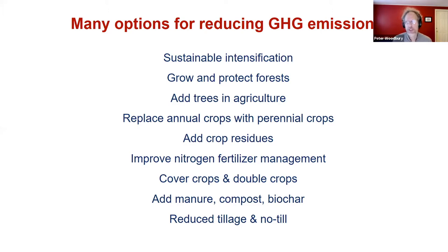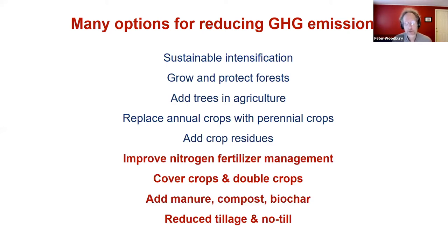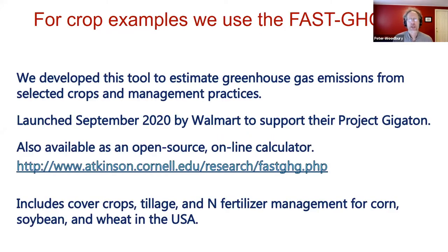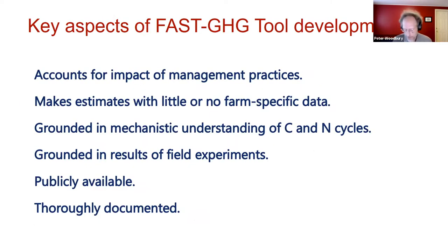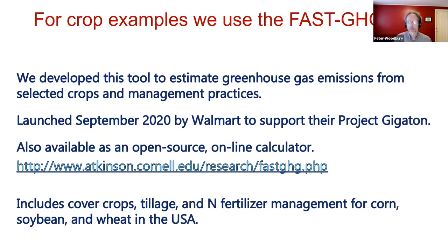There are lots of options for reducing greenhouse gas emissions in agriculture, and I hope you were able to hear Jennifer's previous talk where she went through quite a number of these. I'm going to focus on the bottom four here that are highlighted in red font. I'm going to be focusing on commodity crop production in New York State, but a lot of these results are relevant for other cropping systems and certainly for other states as well.